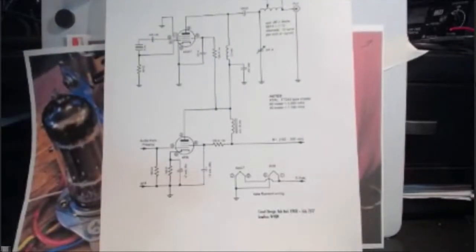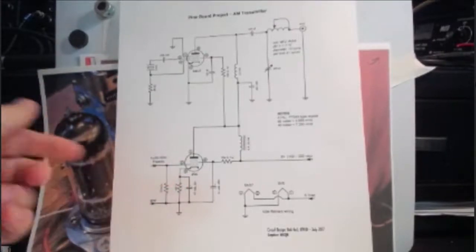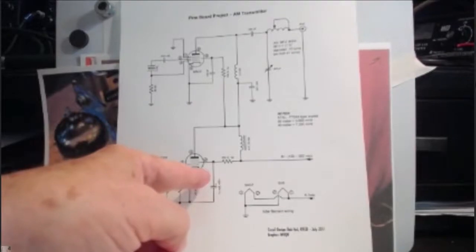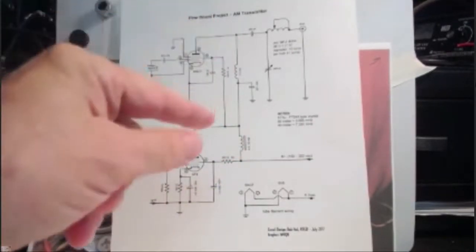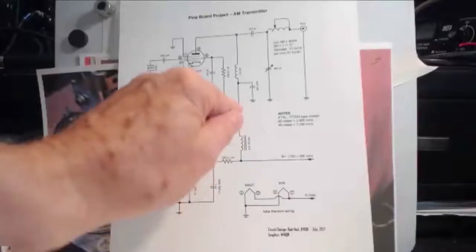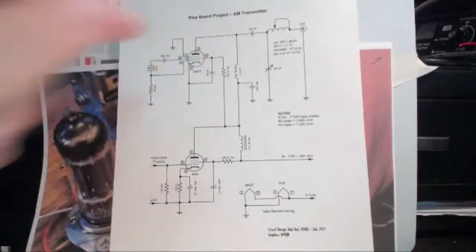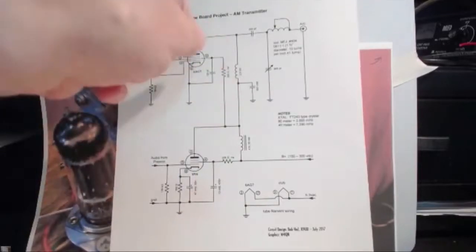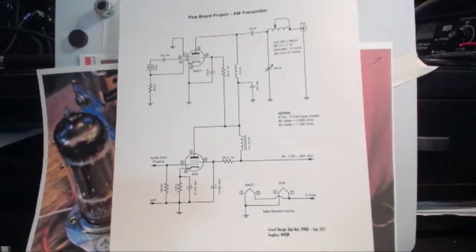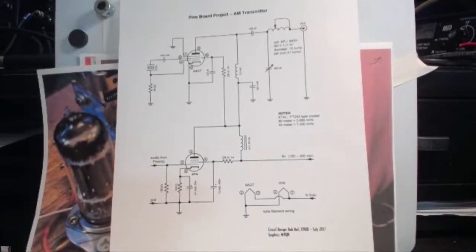This is the complete schematic of the transmitter. It's a 6ACG7 and a 6V6. What happens is we come out of the preamp into the 6V6. This becomes a Heising modulator. When you modulate this tube, what it does is it goes up here and changes the plate and the screen grids at the rate of the audio. It modulates the final amplifier. It's really quite neat the way that works. Next week George is going to do a whole treatise on this just as he did in the preamp with the green screen.